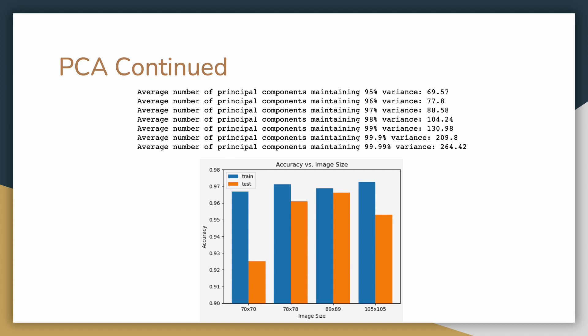We averaged results from the random sample of images to determine the optimal image size. The top image shows the average number of dimensions required to maintain different levels of variance, from 95% to 99.99%. We trained the CNN model with images compressed to each of the sizes shown on the bar chart. Training became too computationally expensive when we compressed the images to 131 by 131 pixels and above, which maintain 99% variance and above.